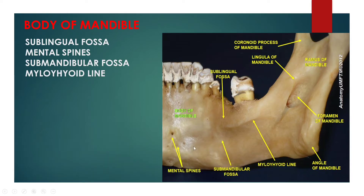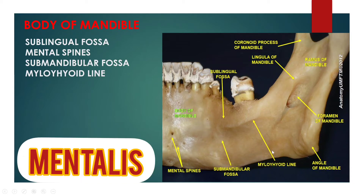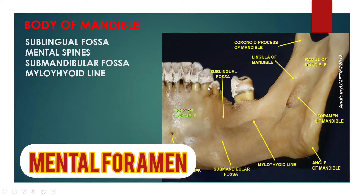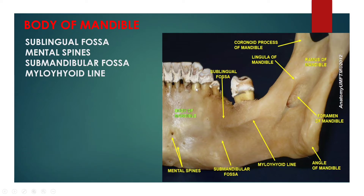On either side of the symphysis, just below the incisor teeth, is a depression called the incisor fossa, which gives origin to the mentalis and a small portion of orbicularis oris. Below the second premolar tooth, on either side, midway between the upper and lower border of the body, is the mental foramen, for the passage of the mental vessels and nerves.